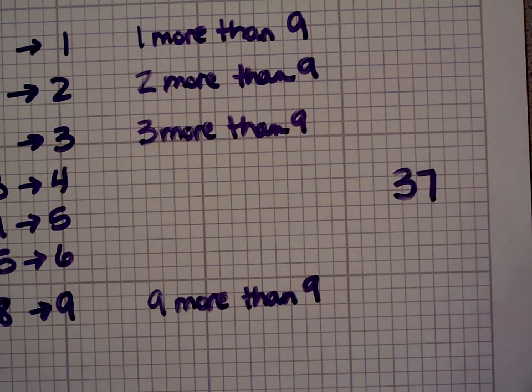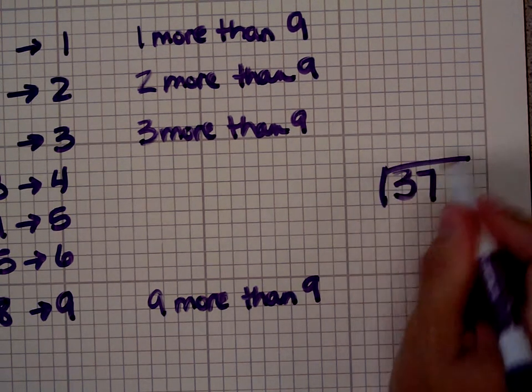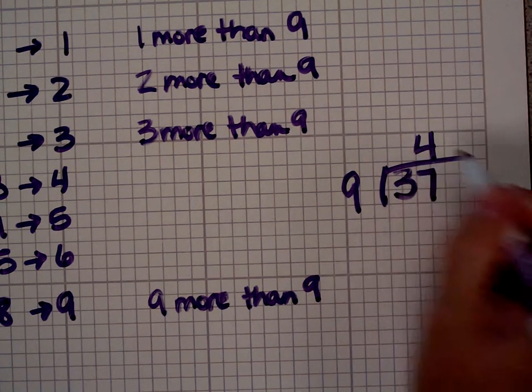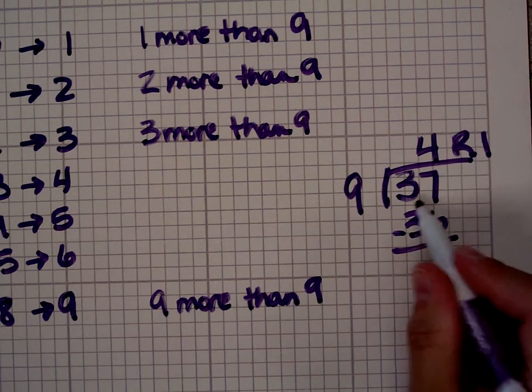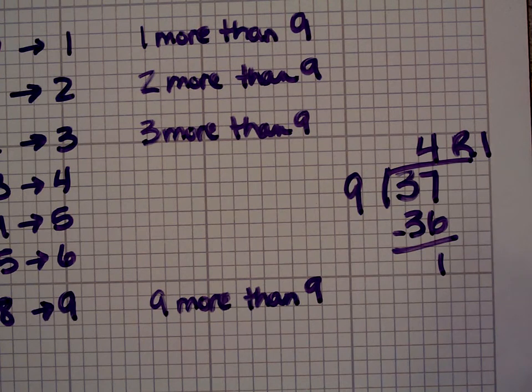Let's look at the number 37. I know that 37 divided by 9 is 4, 4 times 9 is 36, and I have a remainder of 1. What's my digital root of 37? 3 plus 7 is 10, 1 plus 0 is 1. So that's true.